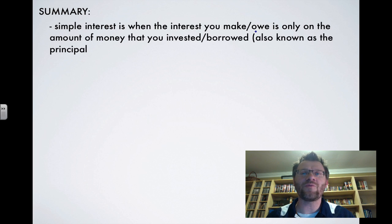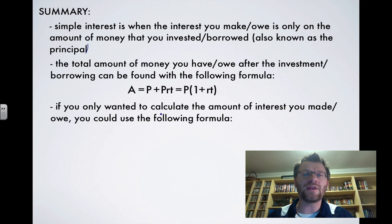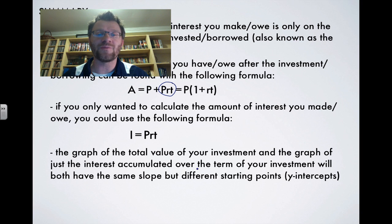So in summary, simple interest is when the interest that you make or owe is only calculated upon the amount of money that you invested or borrowed, also known as the principal. The total amount of money that you have or owe after the investment or borrowing can be found with the following formula. And that is that A is equal to P plus PRT. And if you took out P as a greatest common factor, you get that A is equal to P times one plus RT. Now, if you only needed to calculate the amount of interest you made or the amount of interest that you owe, you could use the following formula. And that means that I is just the end of this formula, right? It's just your principal multiplied by your rate, multiplied by how long you have that money invested in the bank, or if you're borrowing money, how long you've borrowed it for. The graph of the total value of your investment and the graph of just the interest accumulated over the term of your investment will both have the same slope, but they'll have different starting points, which means they have different Y-intercepts. And we did an example of that. And your assignment is found on pages 14 to 17. Good luck, and we'll see you in class.